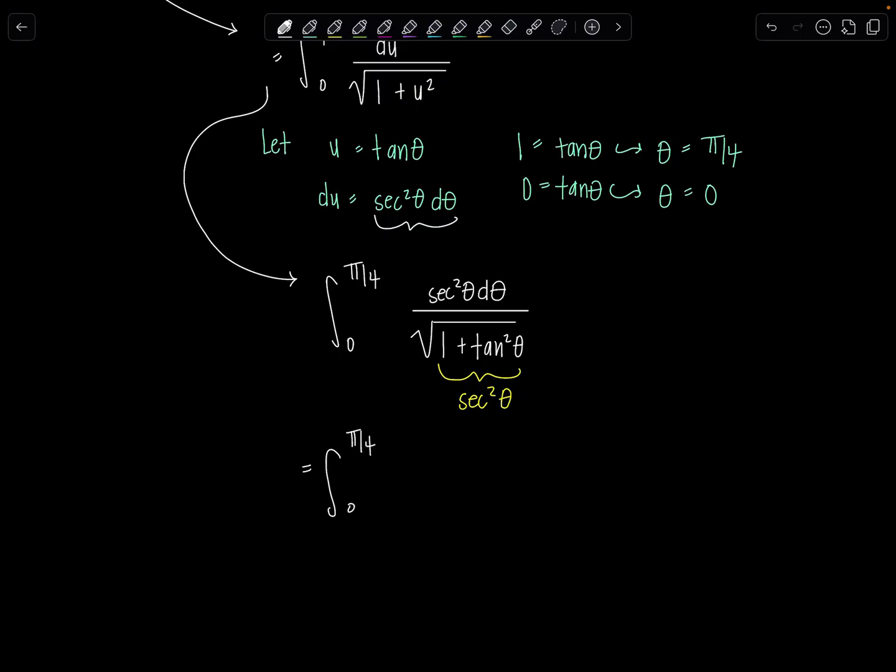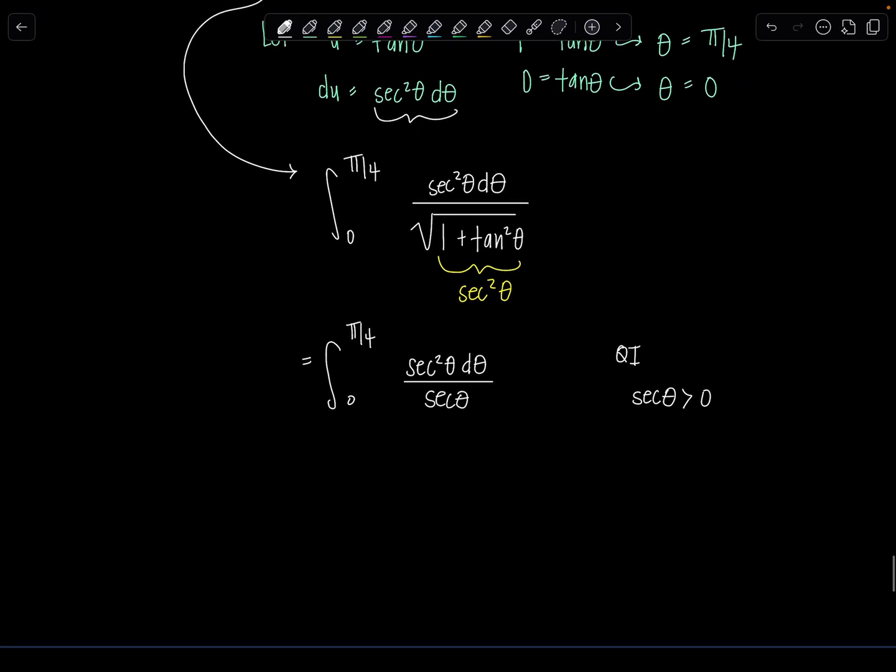So technically it's absolute value of secant theta. But notice we're in quadrant one so we know secant theta is positive so we don't need to keep the absolute value bars. So we have secant squared theta over secant theta which just gives us integral zero to pi over four secant theta d theta.